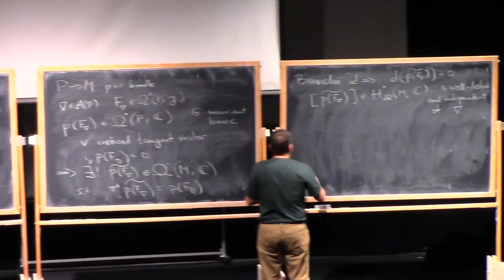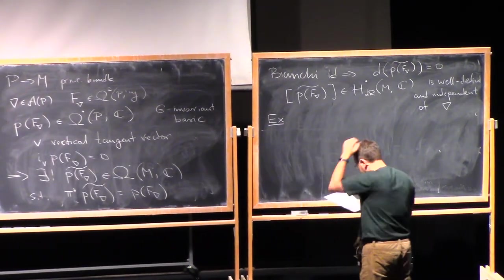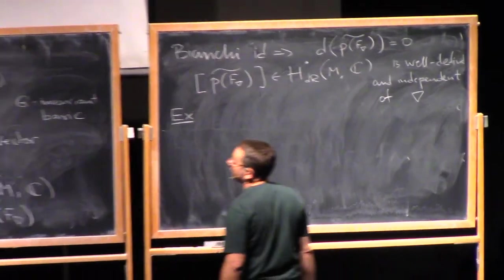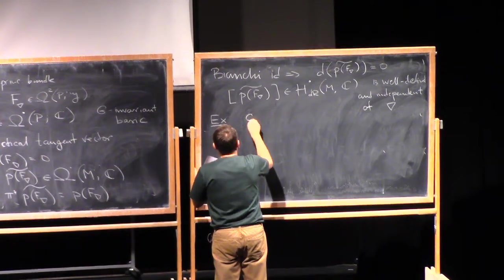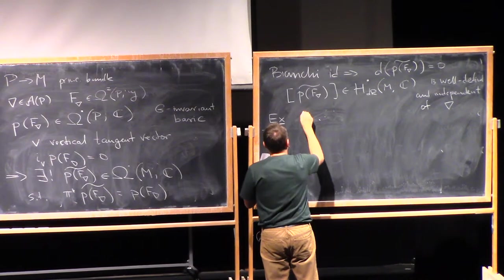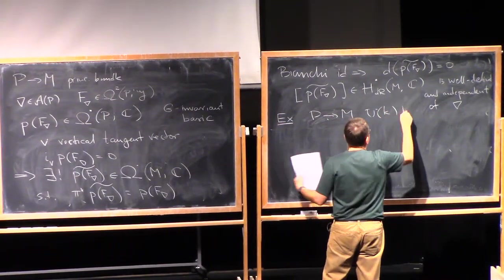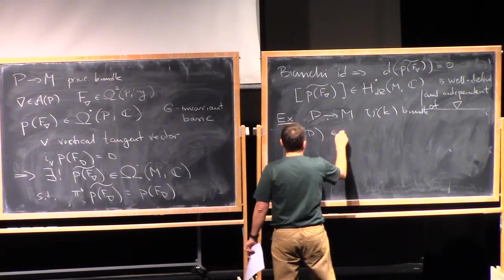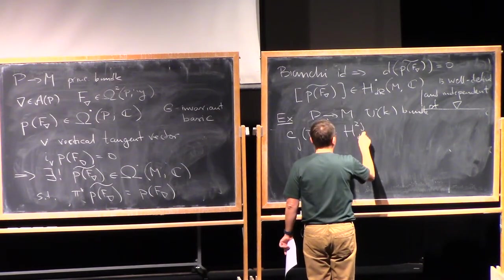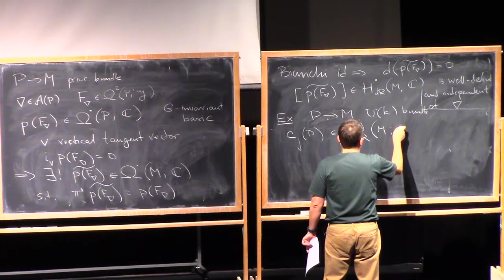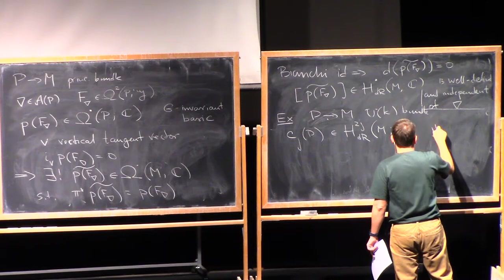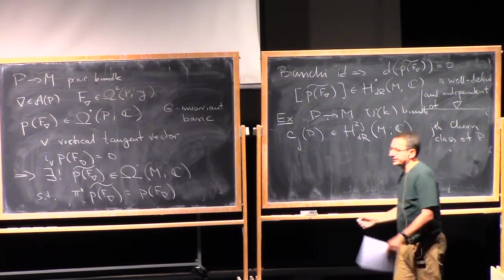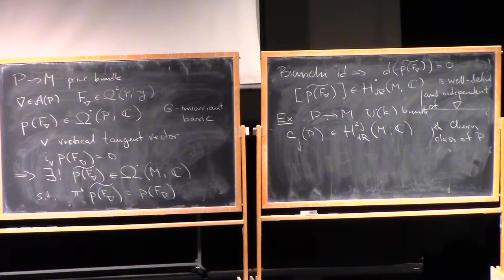Now, here is an example which will be of importance to us. So if you have a U(1), a U(k) bundle, as we have had over there, then c_j of P, so P is a U(k) bundle, then c_j of P, so this is now an element in the 2j-th de Rham cohomology group of M with values in C. So this is called the j-th Chern class of P.